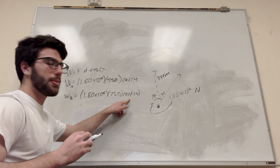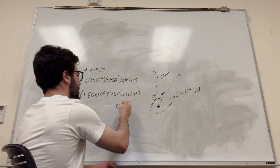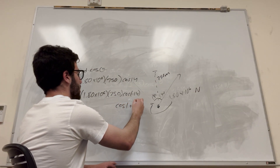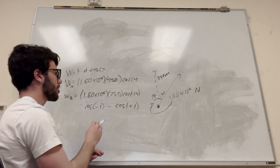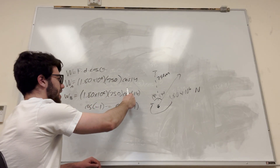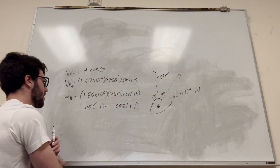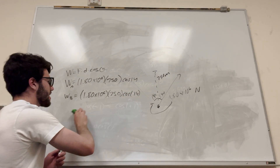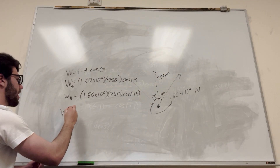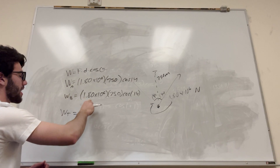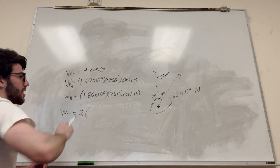There's something we know about cosine — you can check this with your calculator. Cosine of a positive number equals cosine of the negative number, so cosine of positive 1 equals cosine of negative 1. So cosine of negative 14 is the same as cosine of 14. It doesn't make a difference. You can see that these are basically the exact same equation, so the total work done by both tugboats is just two times one of them, because you're adding them together.